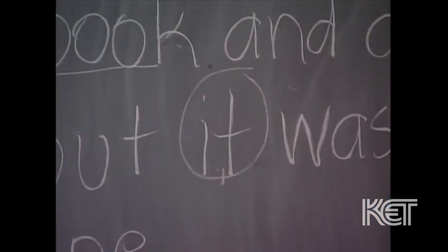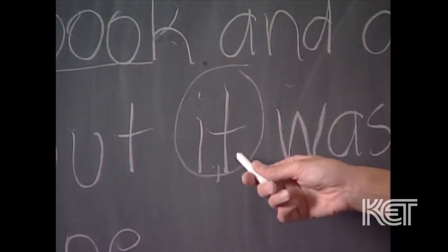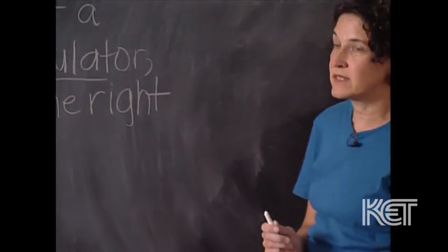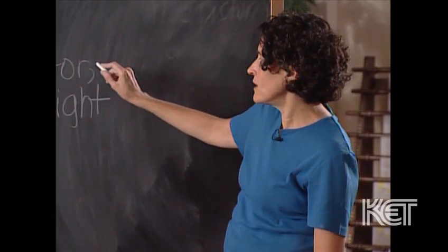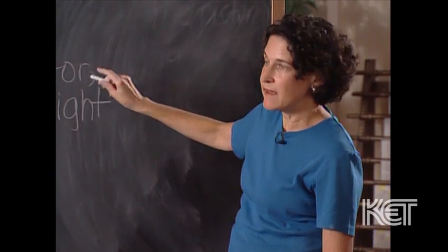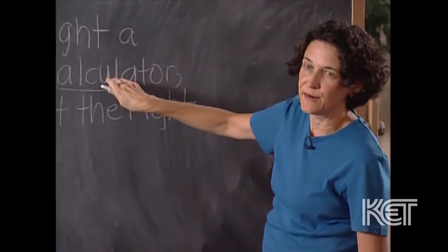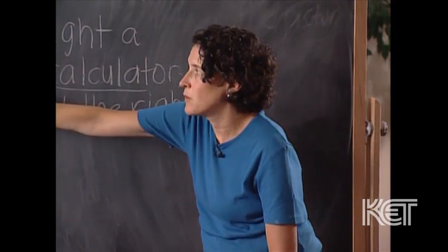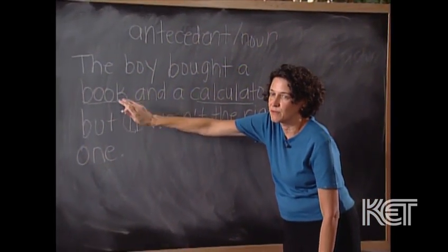In this case, you may not be able to use a pronoun substitute. You may have to say, 'The boy bought a book and a calculator, but the calculator wasn't the right one.' The writer may have thought 'it' was right next to 'calculator,' so how could the reader be confused? But we are, because there's another noun right there that 'it' could be referring to.